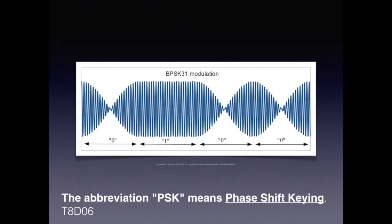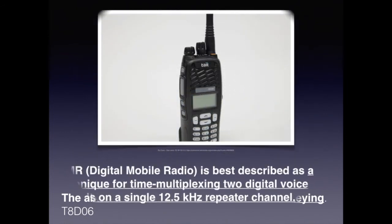Another acronym you need to know is PSK, which stands for Phase Shift Keying. The exam question is something like: the abbreviation PSK means Phase Shift Keying. Another newcomer on the amateur radio scene is DMR — Digital Mobile Radio. For the exam, you need to know that DMR is best described as a technique for time-multiplexing two digital voice signals on a single 12.5 kilohertz repeater channel.